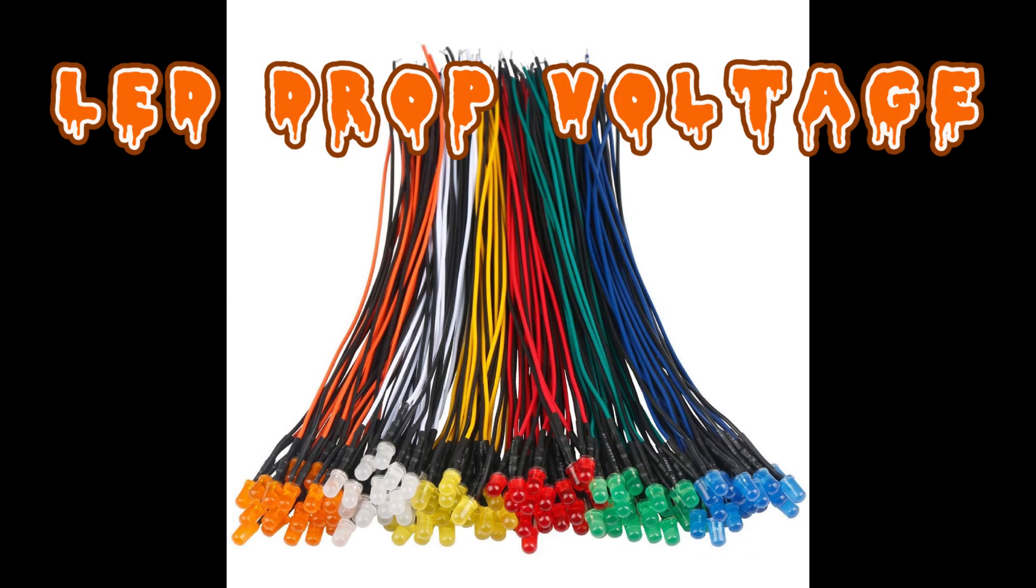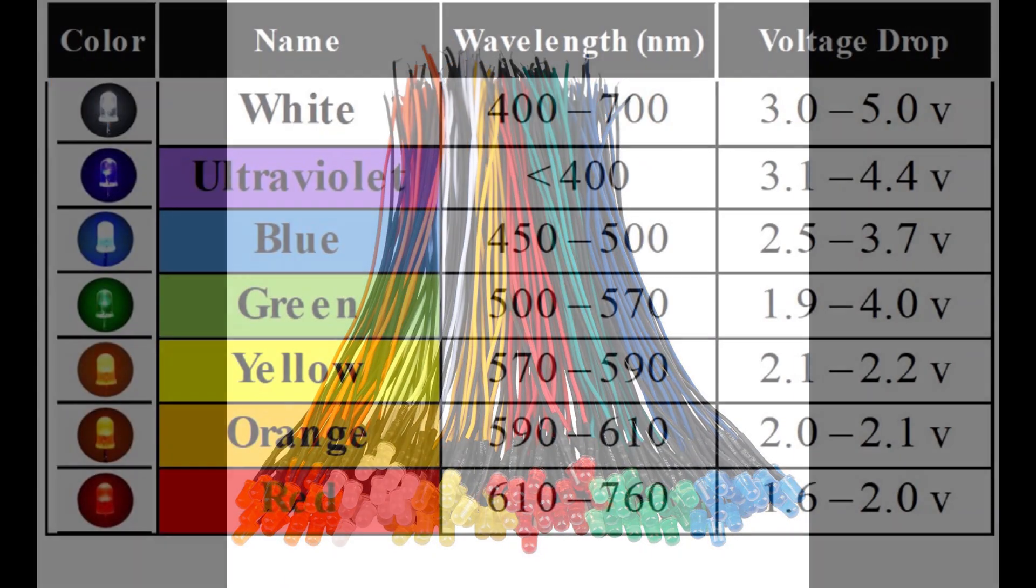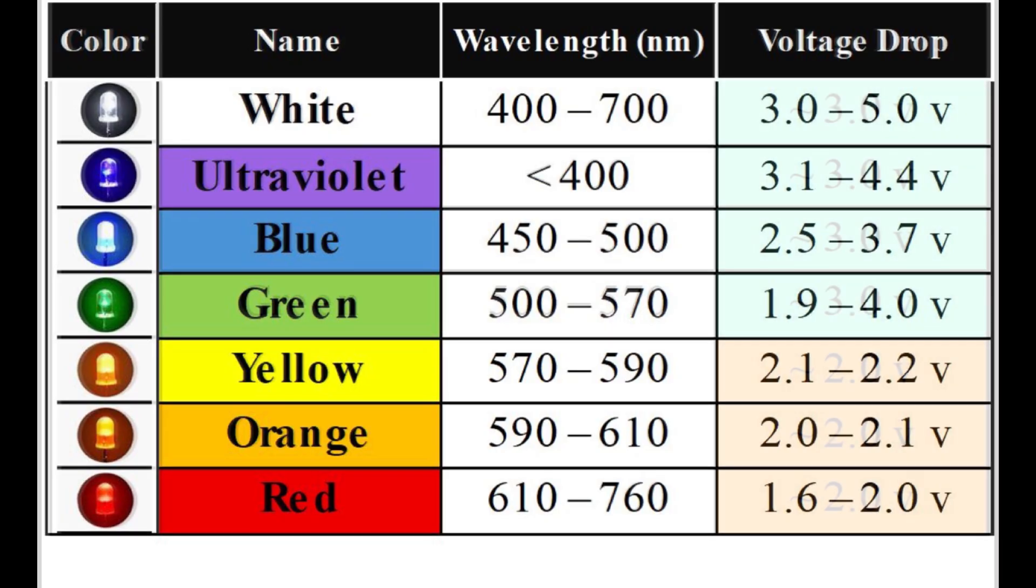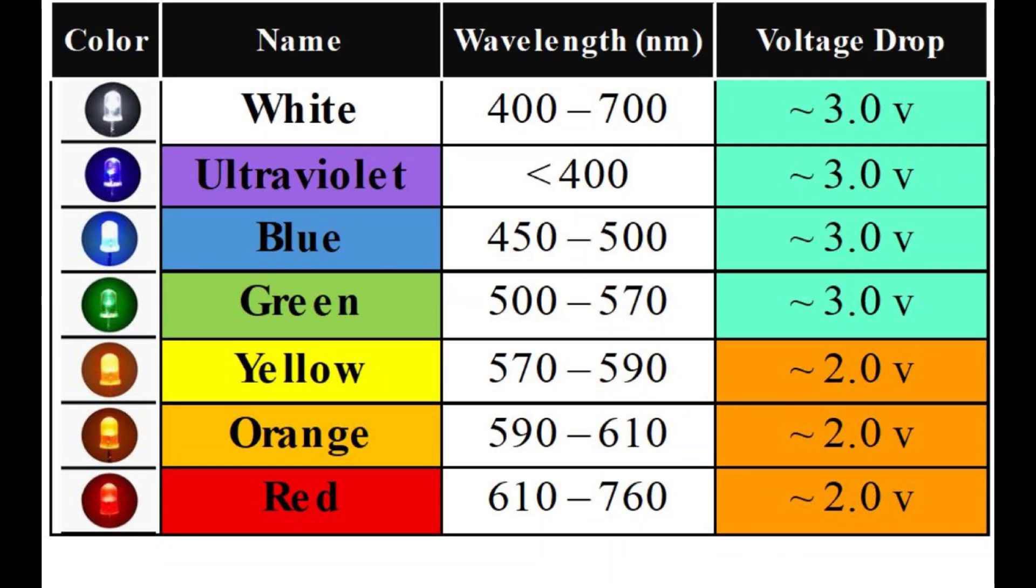LEDs have a nominal voltage required to light them up. This is known as the forward voltage drop. This voltage drop is slightly different for every color. Notice as the wavelengths get shorter, the higher the voltage needed to light them. For the purpose of selecting a current limiting resistor, I will round the forward voltage drop: 2 volts for colors red, orange, and yellow, and 3 volts for green, blue, UV, and white. These aren't great approximations, but they will get us close to where we need to be.